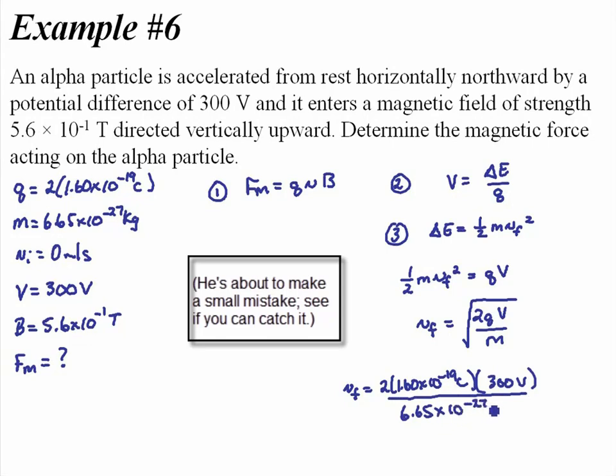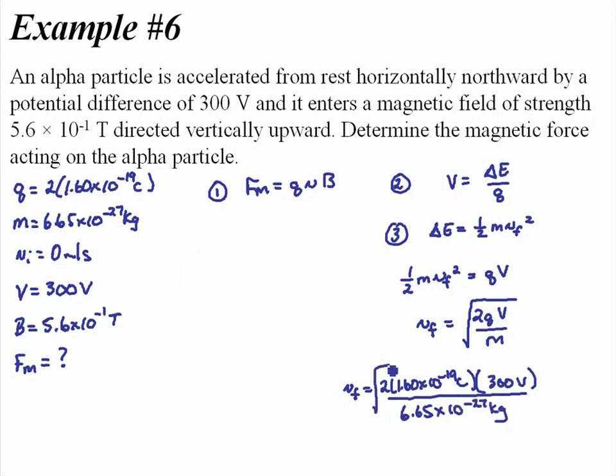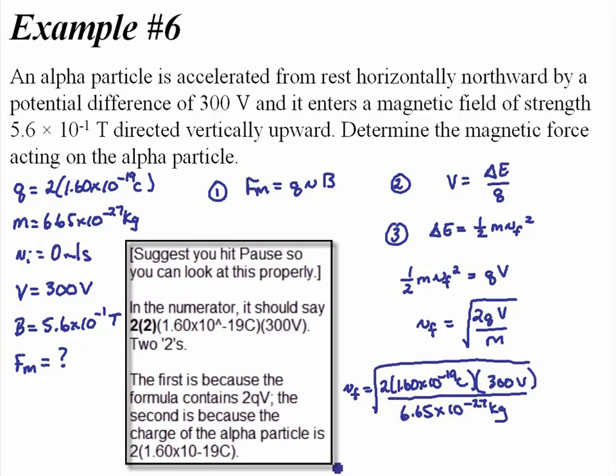2 times 1.60 times 10 to the negative 19 coulombs times 300 volts divided by 6.65 times 10 to the negative 27 kilograms. Take the square root of that answer should give us a final velocity. And I could put this all into one formula, but it's kind of nasty, so I will do it separately. 2 times 1.6 to the exponent negative 19 times 300 divided by 6.65 to the exponent negative 27.